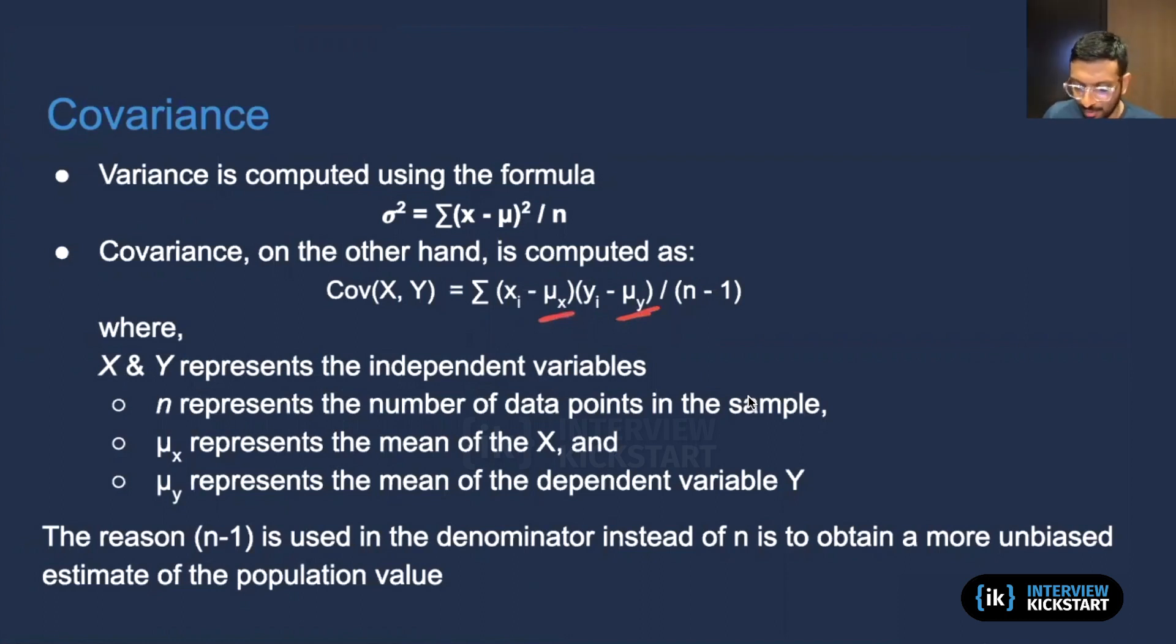Now, you might ask, and it's a good question, why are we dividing it by n minus one? And the reason we do that is because it's been shown empirically, or otherwise as well, there are mathematical proofs for this, which are beyond the scope of this particular video. But I would encourage you to search for it on Google as well. It turns out that using n minus one over here actually gives us an unbiased estimate of the variance, in this case, the covariance. There, we can talk a little bit about why exactly that happens.